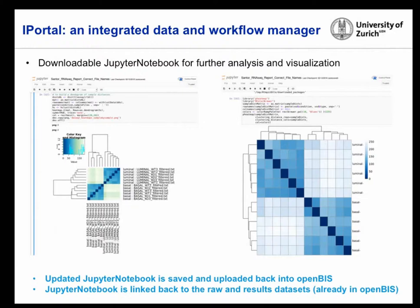When you're happy with your results, you save that Jupyter Notebook and upload it back into OpenBIS, linking it to the raw data and results. You now have the whole sequence: raw data uploaded from machine or user, data annotated, workflow run, report received, and ability to continue working — from HT-seq generated matrices to getting up- and down-regulated genes. Jupyter works in R, Python, MATLAB, C, Java — it's unlimited.